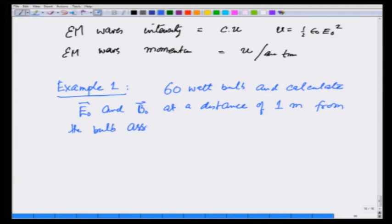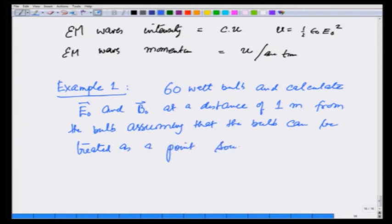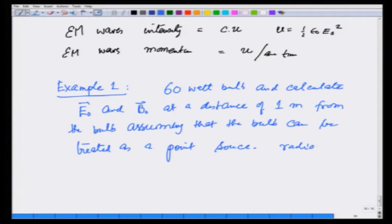We're assuming that the bulb can be treated as a point source. So, I am taking this bulb to be a point source, which is radiating isotropically.